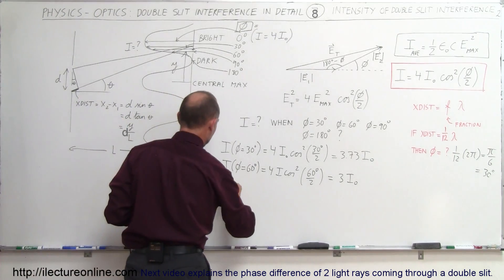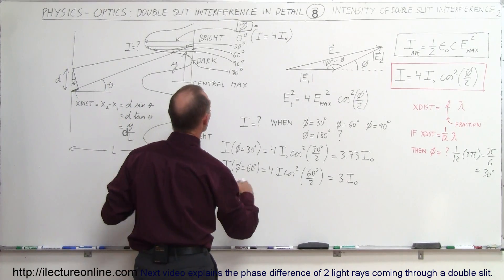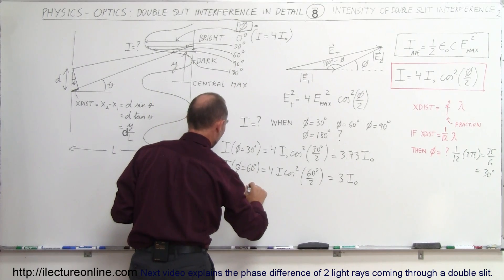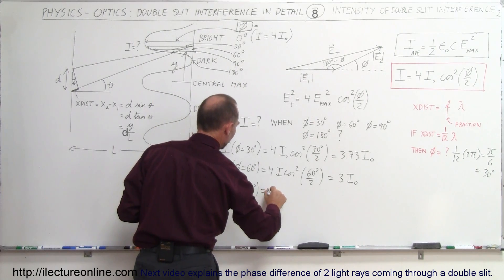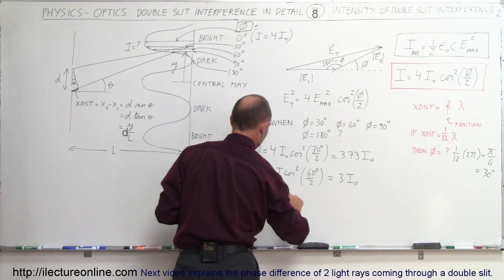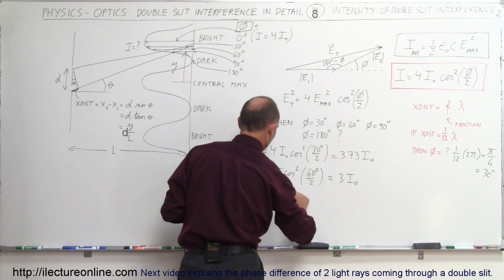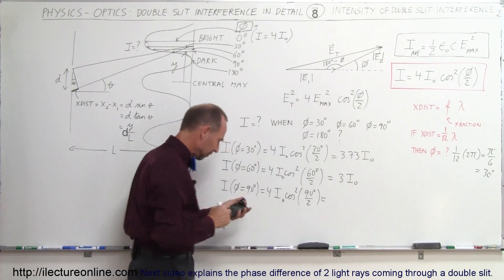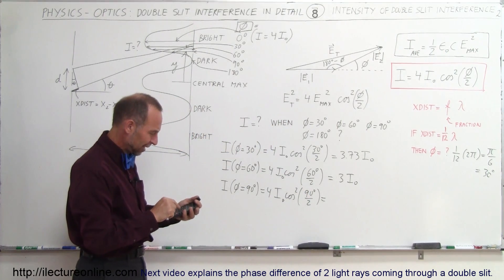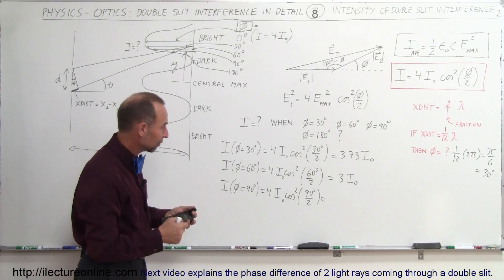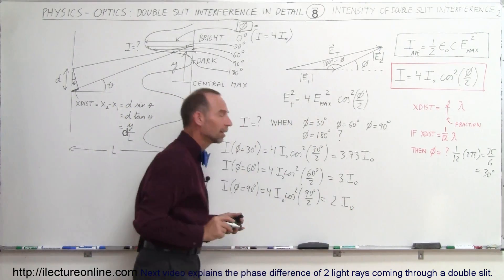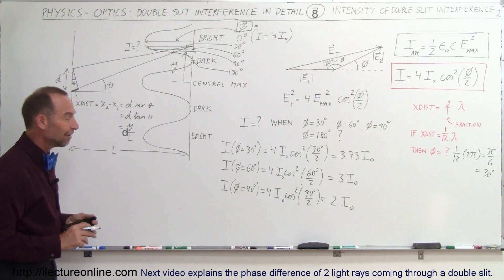When the phase difference is 90 degrees, the intensity equals 4 times I-initial times the cosine squared of 90 degrees divided by 2, which is 45 degrees. Taking the cosine of 45 and squaring it gives 0.5, so the intensity equals 2 times the intensity of each individual wave.